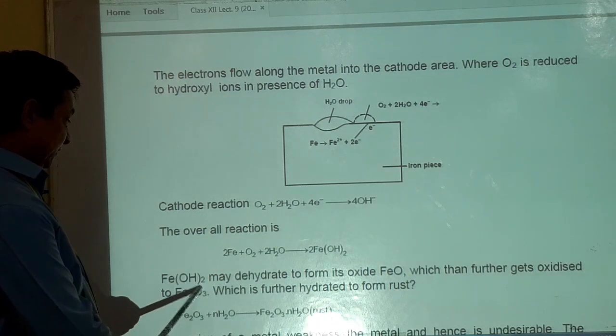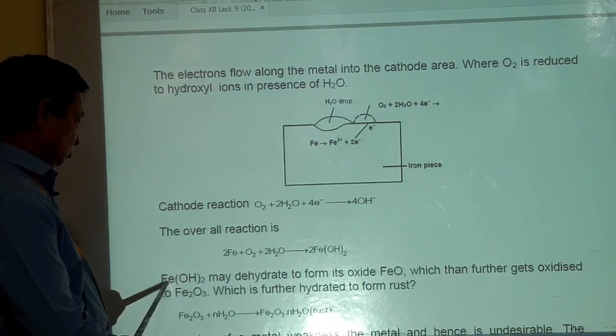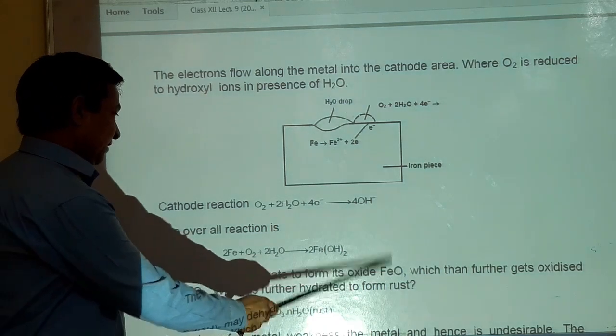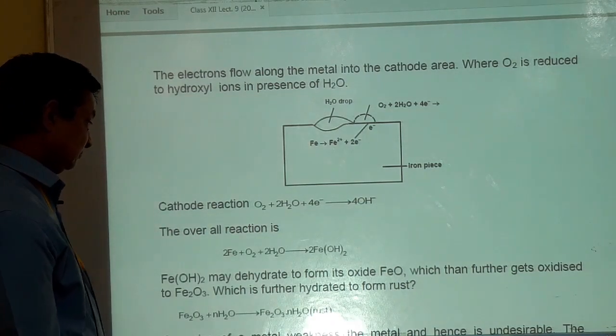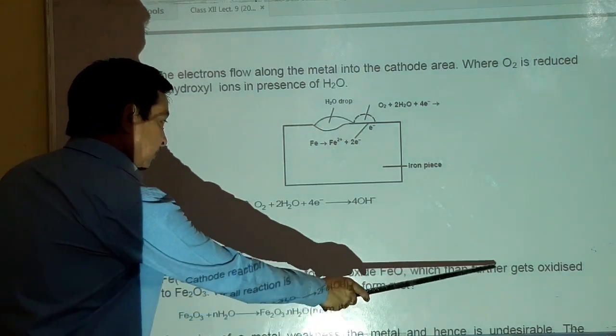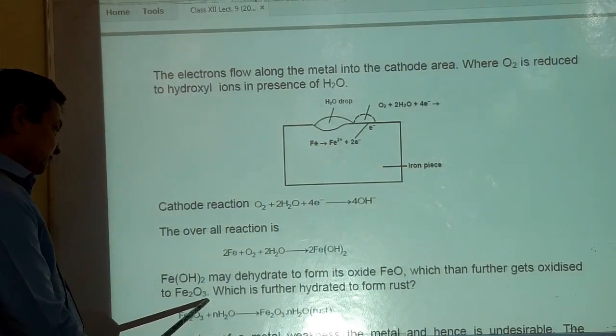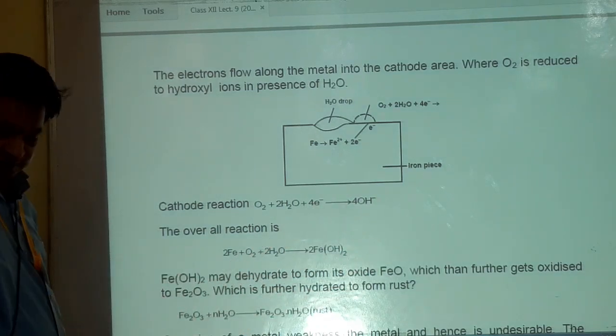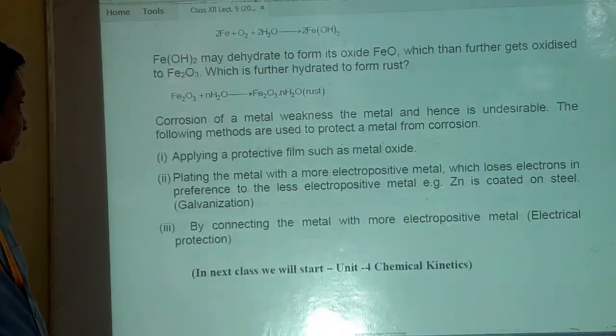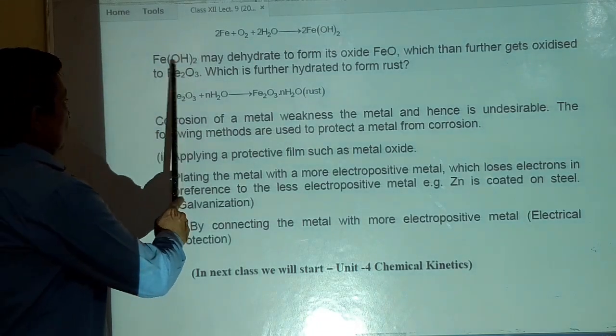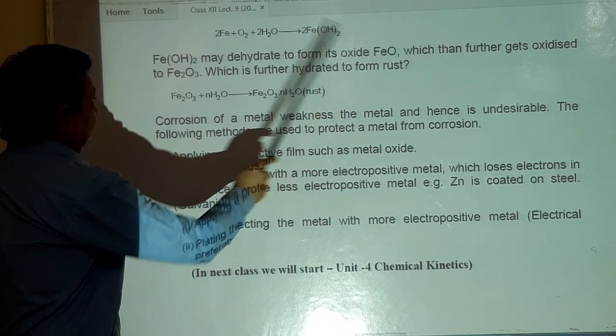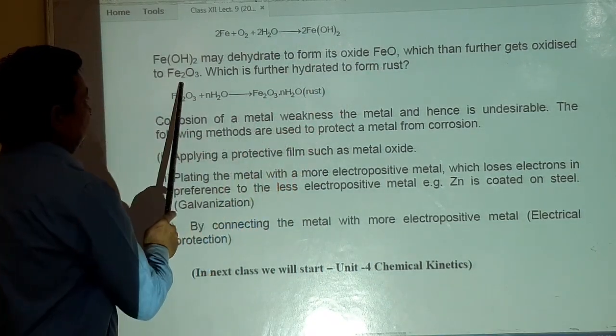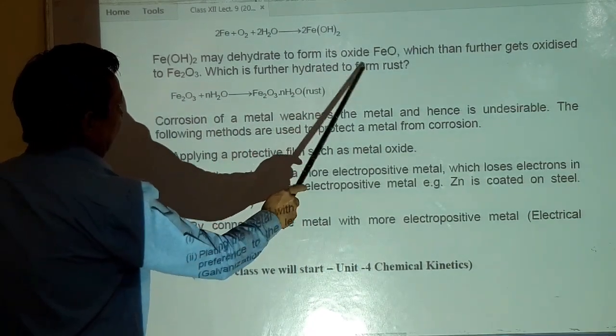Ferrous hydroxide, Fe का oxidation number plus 2 है. तो ferrous hydroxide may dehydrate to form its oxide FeO, which then further gets oxidized to Fe2O3, which is further hydrated to form rust. Fe2O3, जो ferrous oxide बना, इसका dehydration होने के बाद क्या बना? FeO. तो ferrous का क्या बन गया? Ferric.